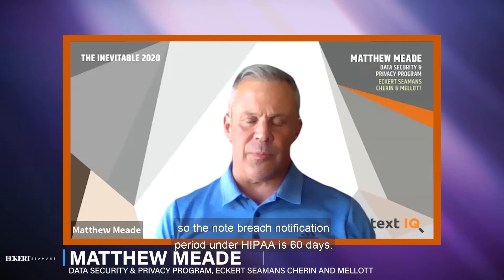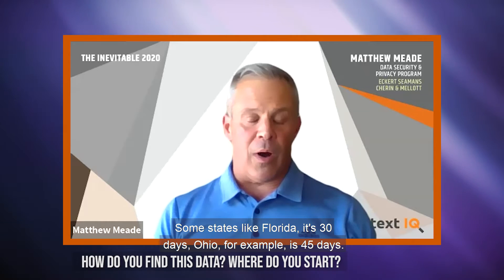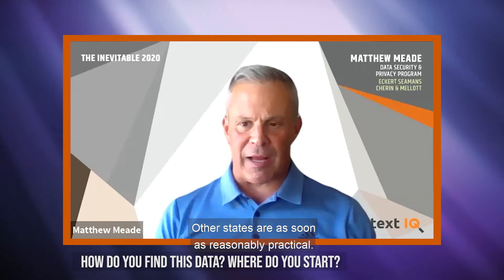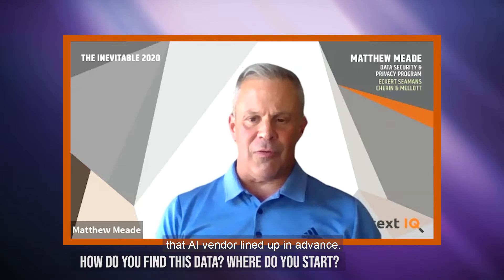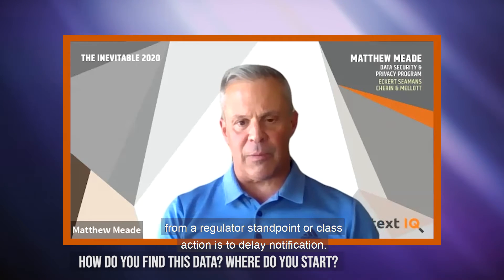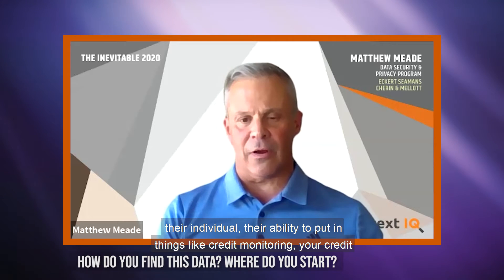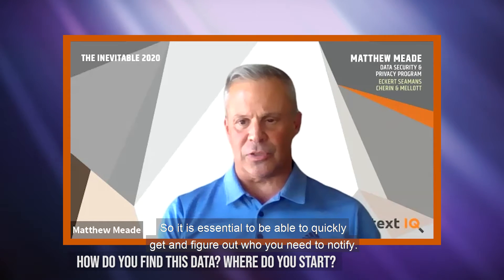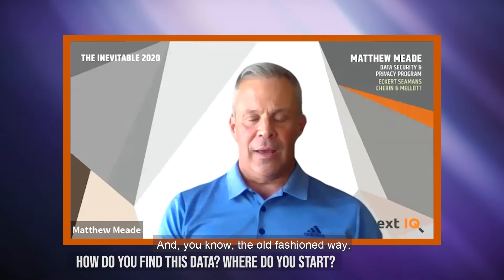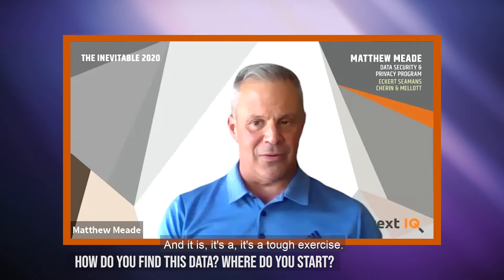From a state regulatory and federal standpoint, the breach notification period under HIPAA is 60 days after you discovered or reasonably should have discovered an incident. Some states like Florida require 30 days, Ohio is 45 days, and other states require notification as soon as reasonably practical. The advice to have that AI vendor lined up in advance — so they're familiar with your system and can quickly get through the records — is great, because one of the best ways to increase potential liability from a regulator or class action standpoint is to delay notification, which harms consumers' ability to put in place credit monitoring or fraud alerts.